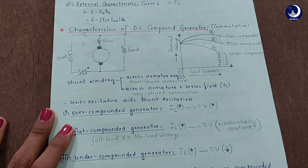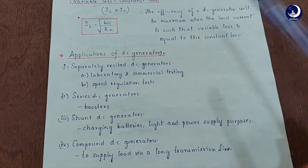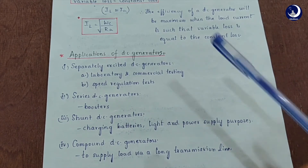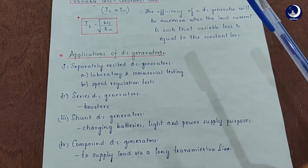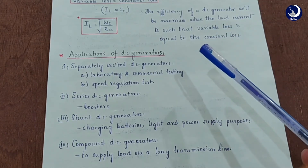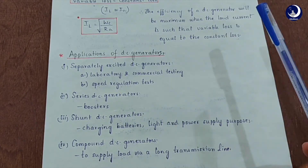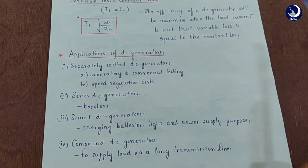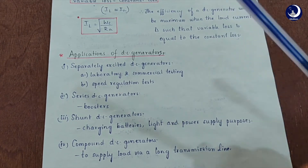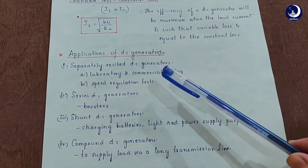Now the last part of our second chapter: applications of DC generators. For the separately excited DC generator, an independent external DC source is required for the field winding, making it costly. Therefore it is rarely used, and its primary uses are in laboratories, for commercial testing, and for speed regulation tests.